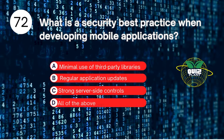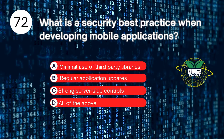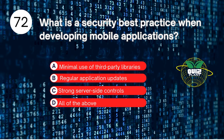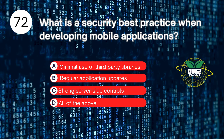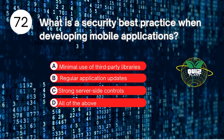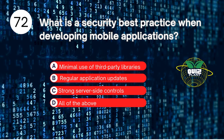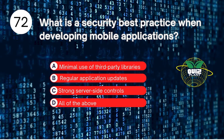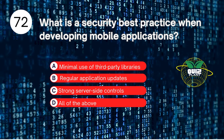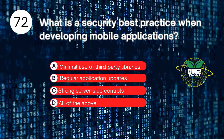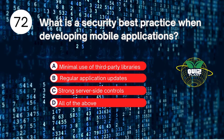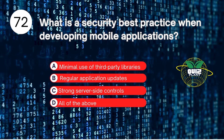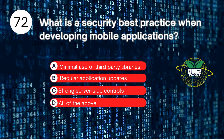Number 72. What is a security best practice when developing mobile applications? A. Minimal use of third-party libraries. B. Regular application updates. C. Strong server-side controls. D. All of the above. The answer is D. All of the above.